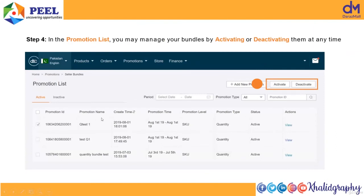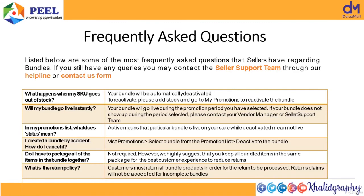Bundle submit करने के बाद promotions list में नया promotion दिखेगा — active होने में mostly 10-15 minutes लगते हैं। Promotion list में status का मतलब: active bundle active है, non-active bundle active नहीं है। अगर आपने आज 15th को bundle बनाया और start date अगले महीने की 25th रखी, तो bundle उसी date से active होगा। अगर आज की date select की तो आज से active होगा।